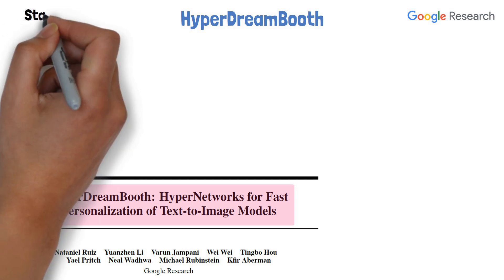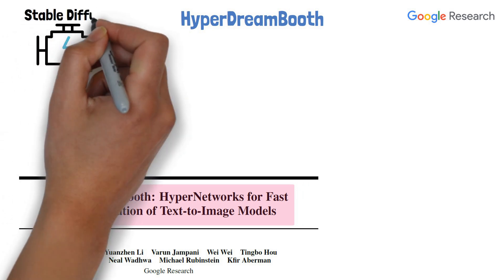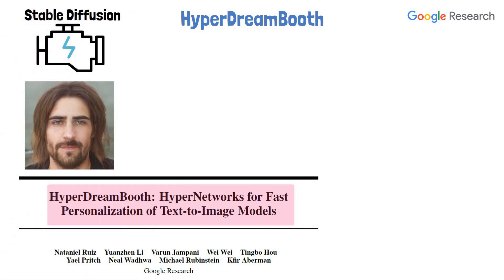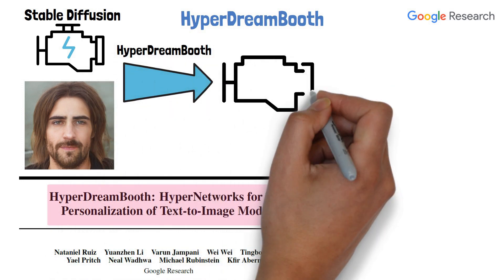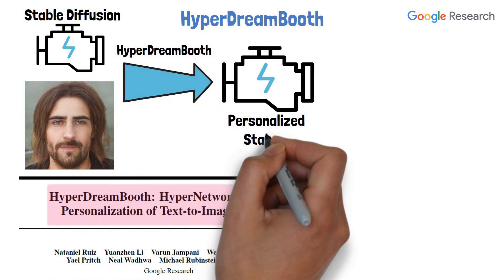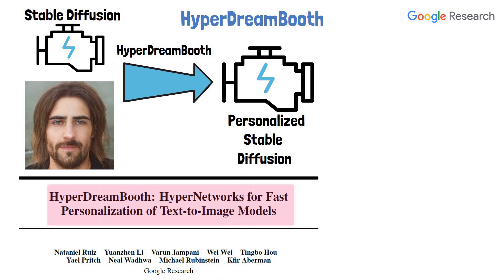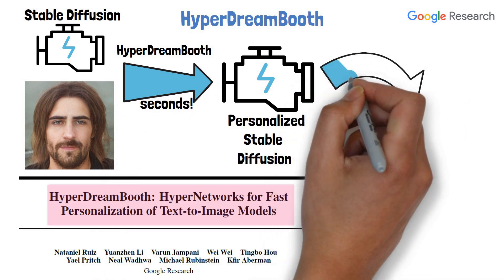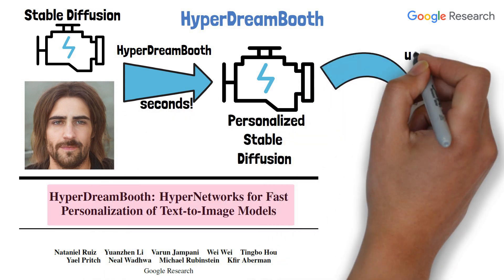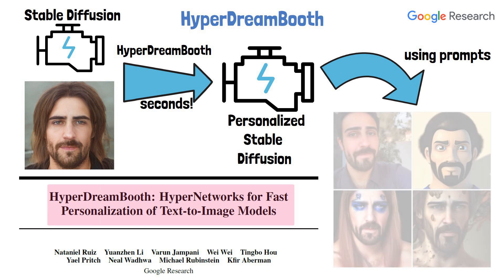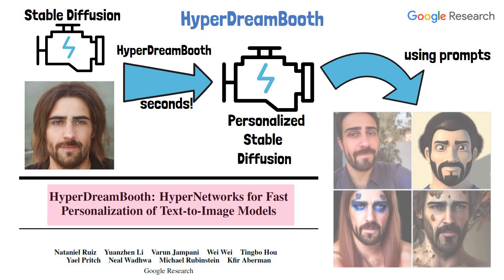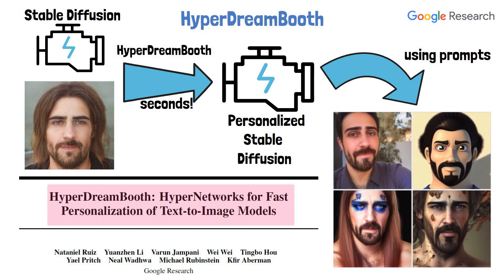With this method we can take a pre-trained text-to-image model, like Stable Diffusion, and a reference image such as this face image, and using HyperDreamBooth create a personalized Stable Diffusion model within seconds. The personalized model can then, given prompts, create images that preserve the details of the reference image while enjoying the capabilities of Stable Diffusion.